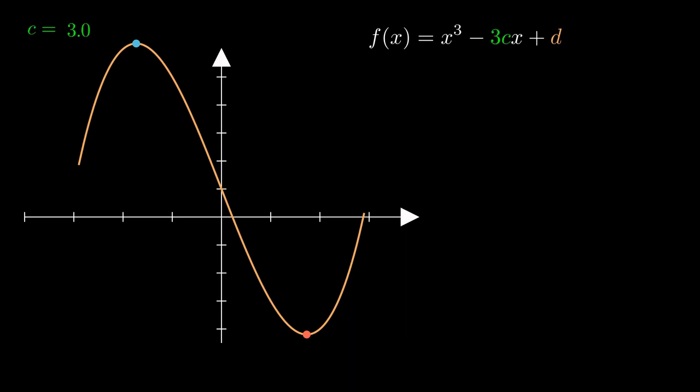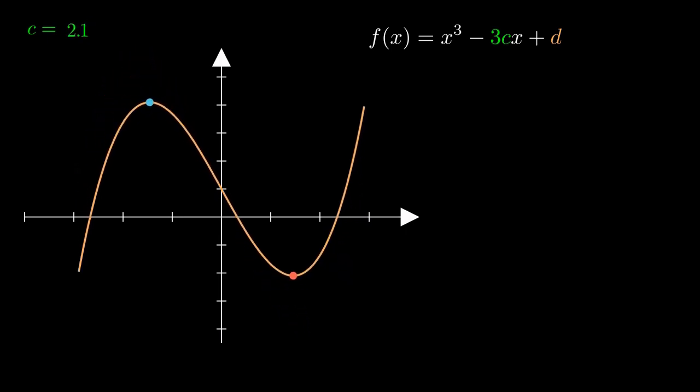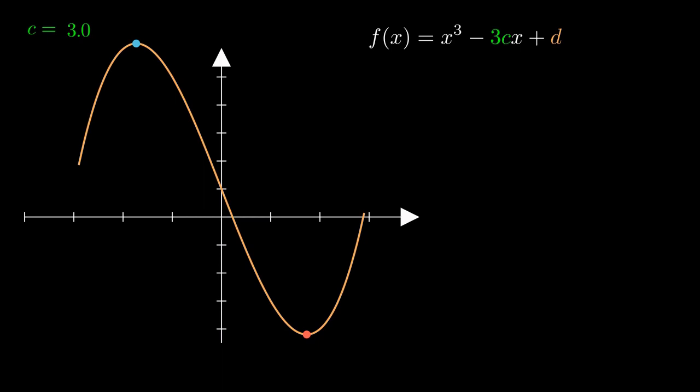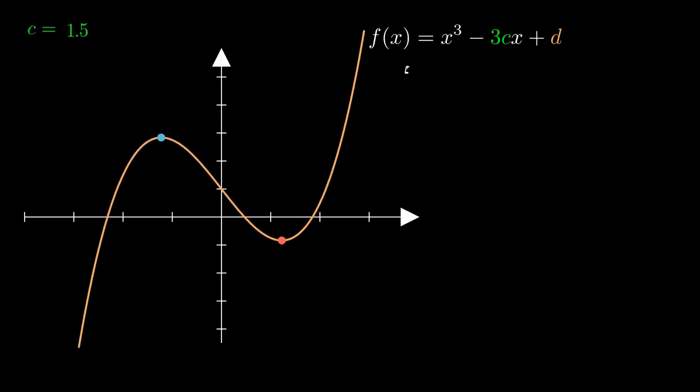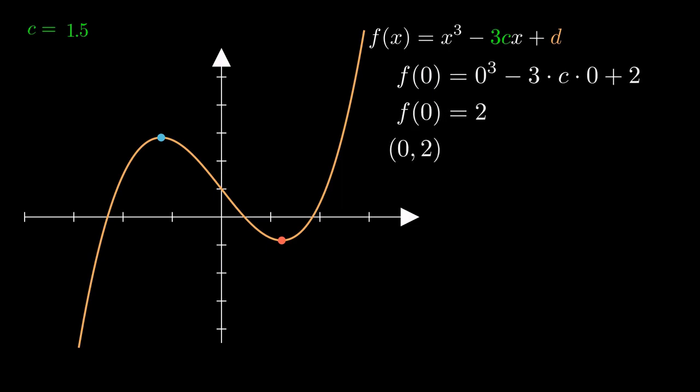We want to analyze f(x) = x³ - 3cx + d and see what happens as parameters c and d change. As c changes, this is how the function changes — notice that the y-intercept is fixed. They're going to start us off showing some graphs as c changes. To get the y-intercept, we just put 0 into the function and calculate, so we get the y-value of 2. The y-intercept is (0, 2).